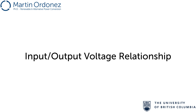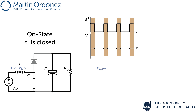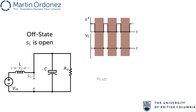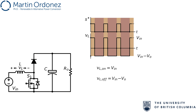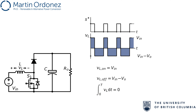In steady state, the relationship between the input voltage and the output voltage of the boost converter can be determined by examining the voltage in the inductor. In the on state, when the switch is closed, VL is equal to the input voltage because S1 is connected to ground. This is maintained until the switch is turned off. In that case, the inductor voltage is equal to the input voltage minus the output voltage. This voltage is maintained until the end of the switching period when the sequence restarts. The voltage balance in the inductor requires that the integral of the voltage in the inductor be zero over the switching period at steady state. This means that the area under the voltage curve is equal to zero.